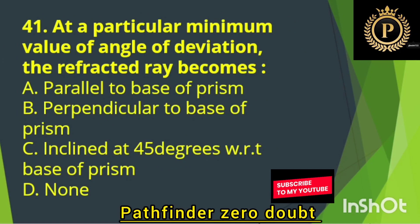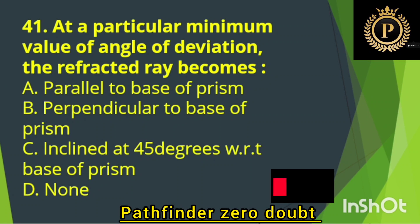At a particular minimum value of the angle of deviation, the refracted ray becomes — Option A: Parallel to the base of the prism.